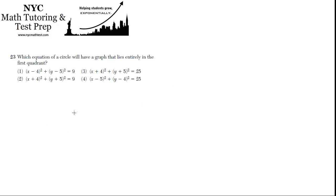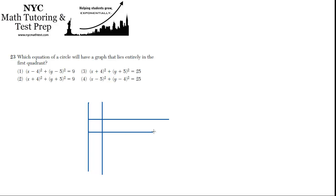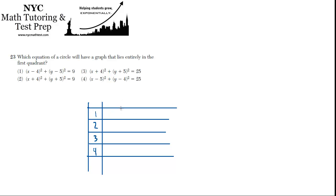Let's make a quick table to examine each of the possible choices. We'll look at choice 1, choice 2, choice 3, and choice 4, and we want to find out what is the center and what is the radius for each.